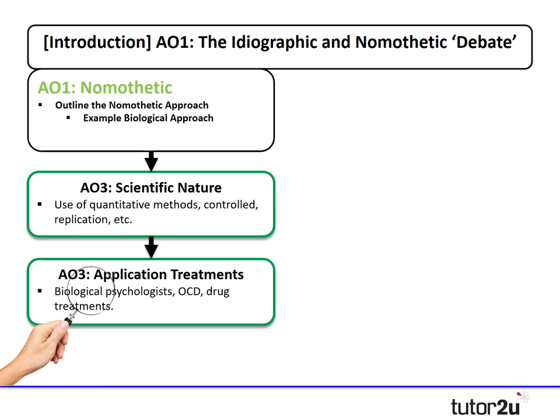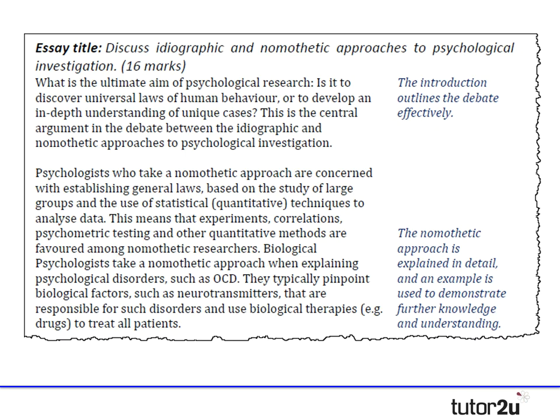Here's what the introduction might look like, around 65-70 words for this opening section. I've written: what is the ultimate aim of psychological research — is it to discover universal laws of human behaviour, or to develop an in-depth understanding of unique cases? This is the central argument in the debate between the ideographic and nomothetic approaches. Psychologists who take a nomothetic approach are concerned with establishing general laws based on large groups using statistical quantitative techniques — experiments, correlations, psychometric tests. Biological psychologists take a nomothetic approach when explaining disorders like OCD, pinpointing biological factors like neurotransmitters to then treat patients.